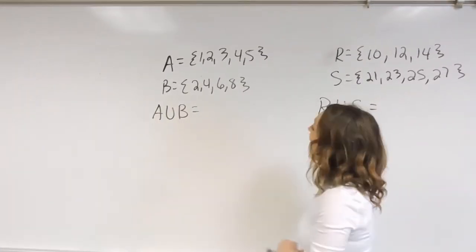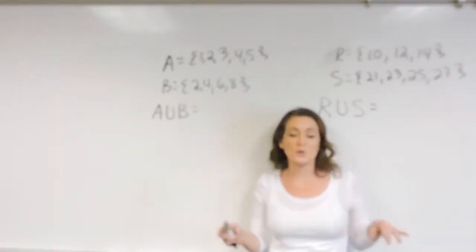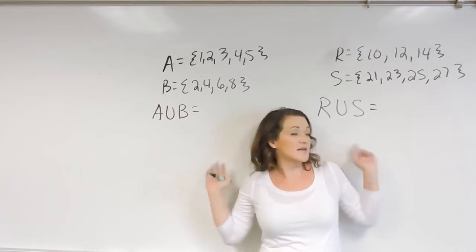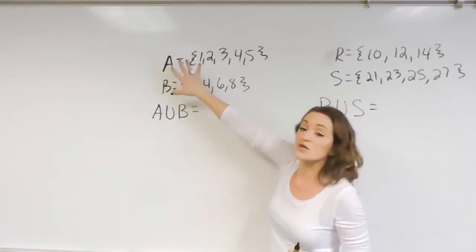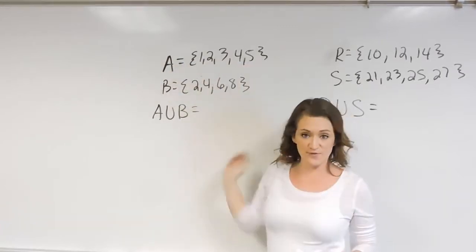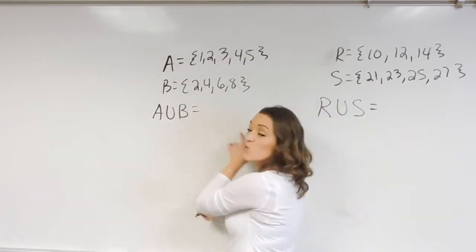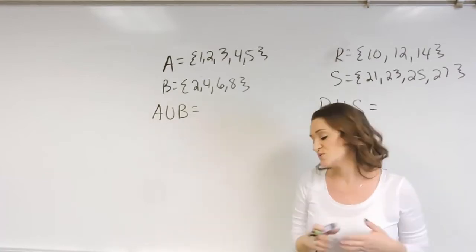Okay, so let's talk about how do we find a union when we're given a set of sets. So here I have two different examples. Let's start with this example right over here. We're given two different sets, and we need to figure out what is the union of the two sets.